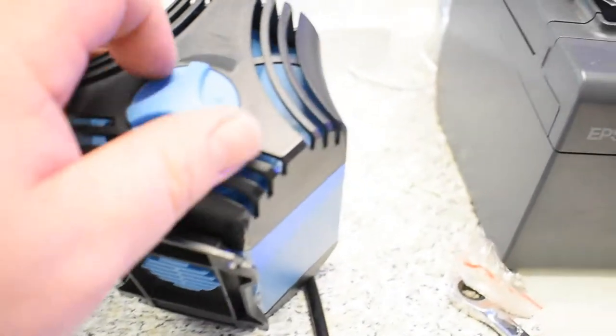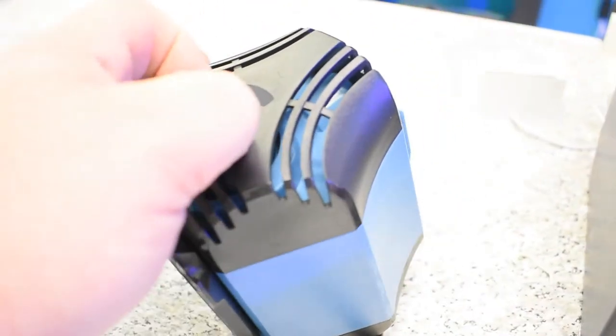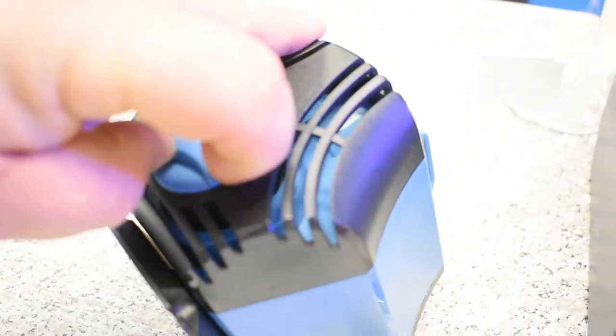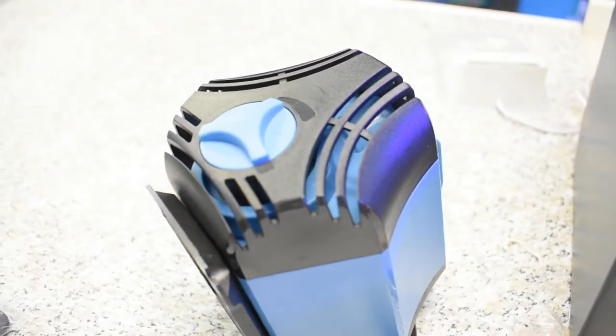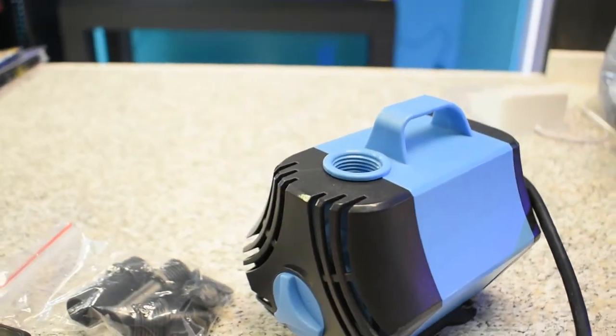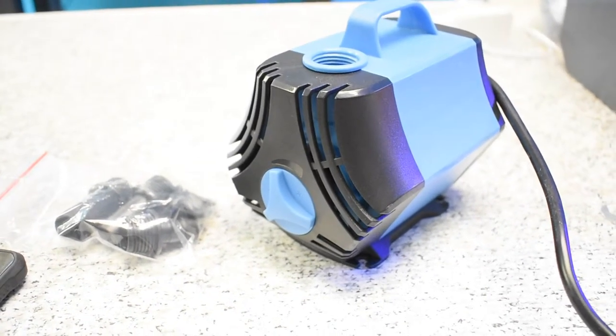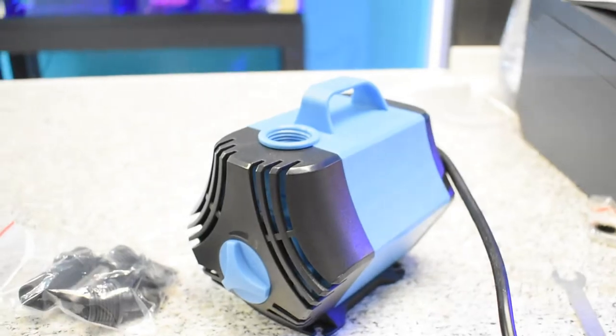They have this little adjustable knob here that you can crank the volume up or down. It just opens and closes a little valve inside. It restricts the amount of water that can come into the pump, so you can turn it up or down. We're just going to crank it up and let it flow. So that'll be our next project: we're going to stick those into the sump.